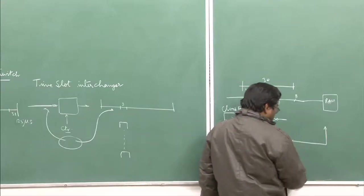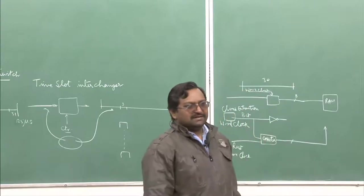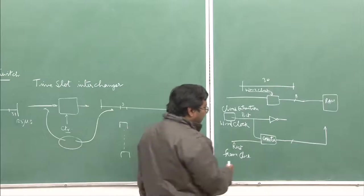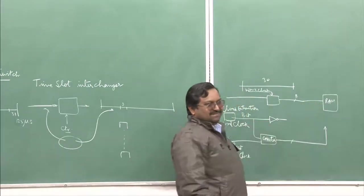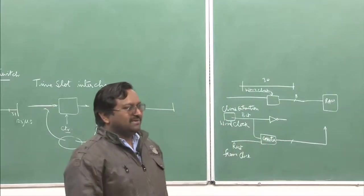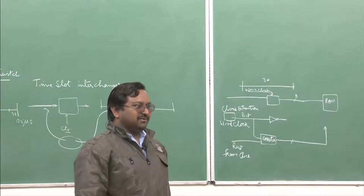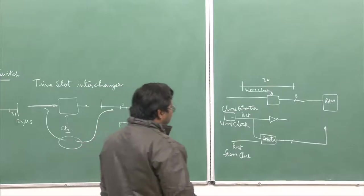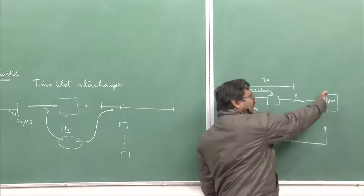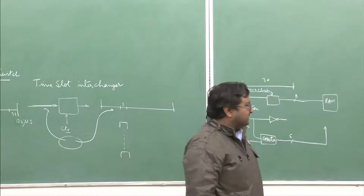This counter output is used for the write address. For an E1 system with 30 slots, you need 5 bits since 2⁵ = 32. So this is a 5-bit bus. The width depends on how many words are stored inside the RAM — the RAM size governs this. I also need to read out, so the read address must also be fed into the system and goes to the same port as the write address — hence a multiplexer is needed.